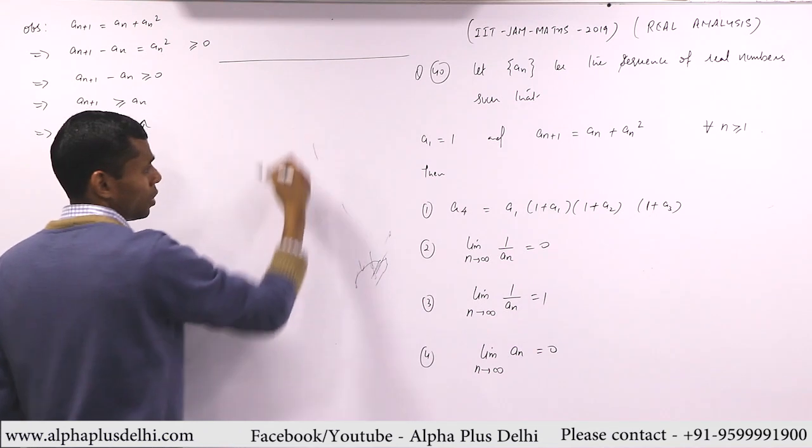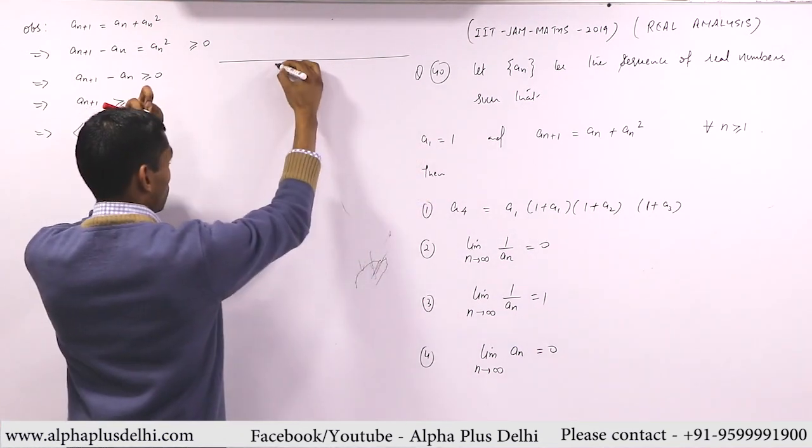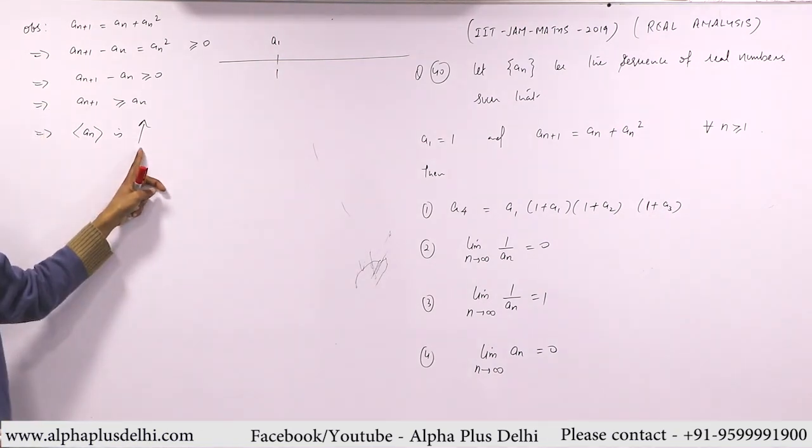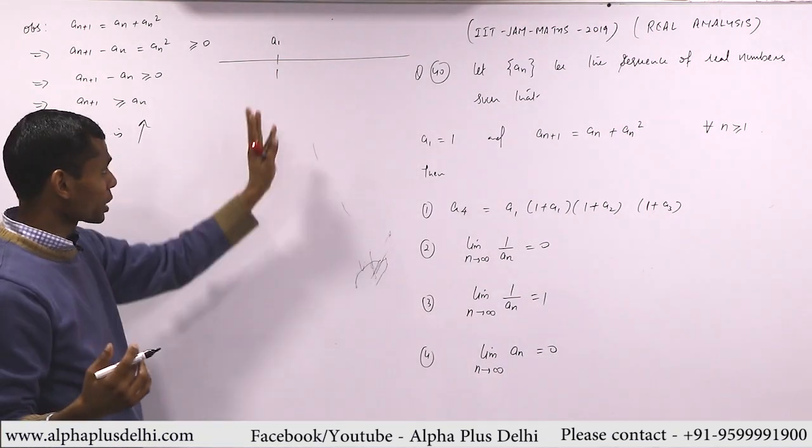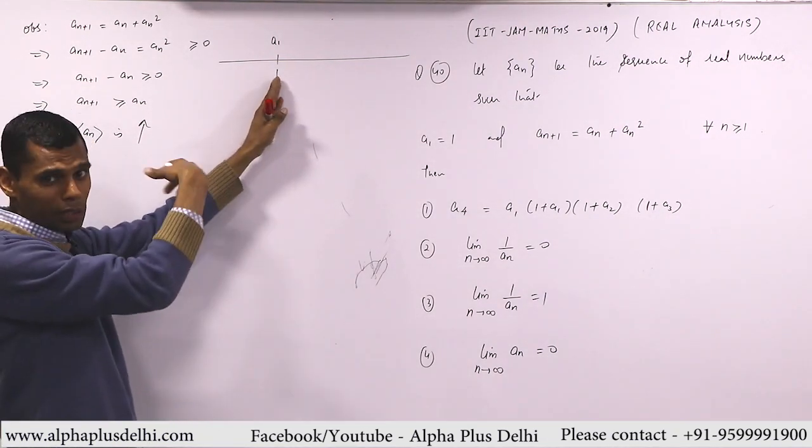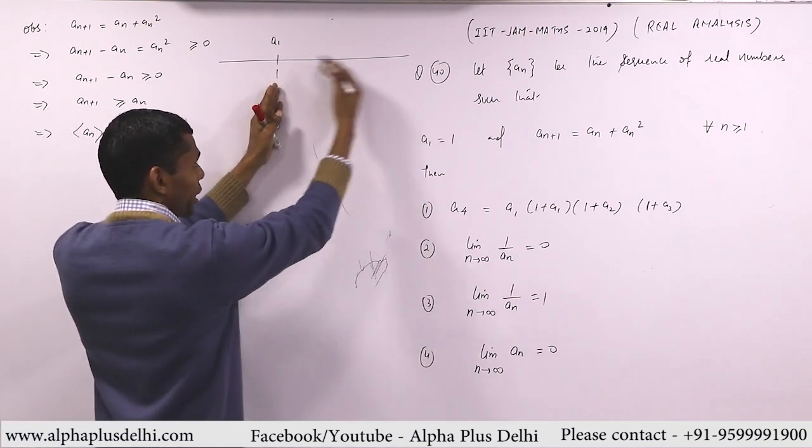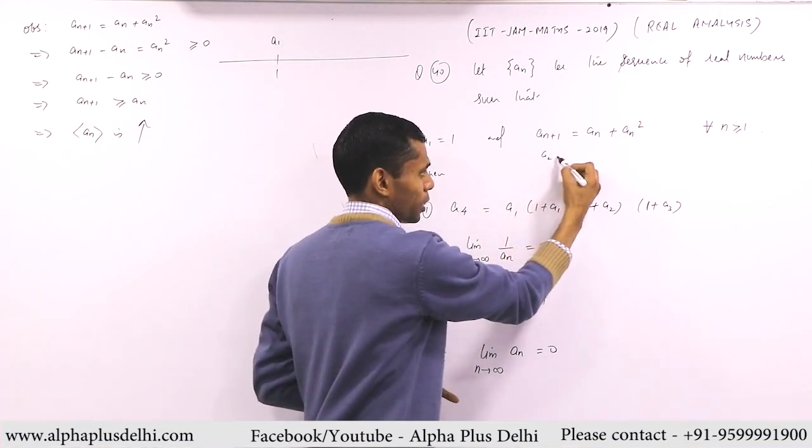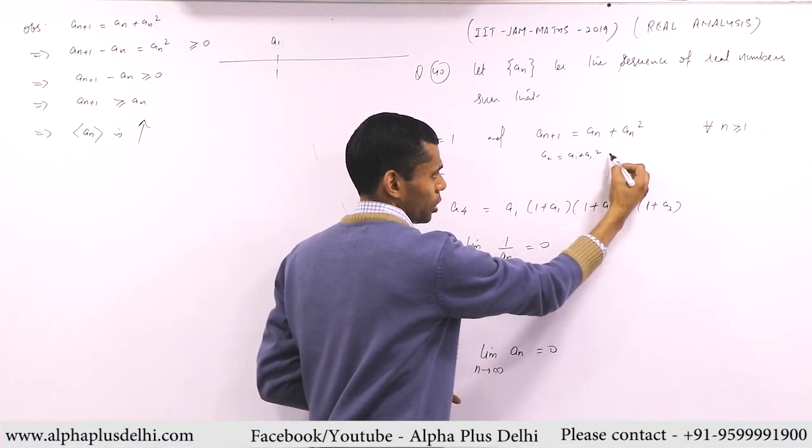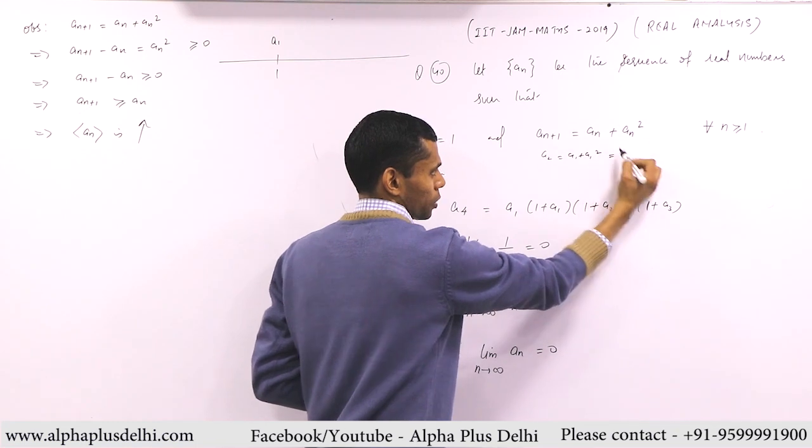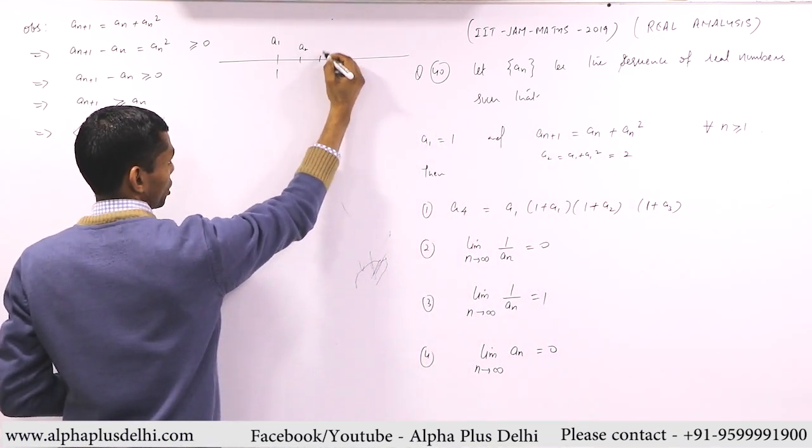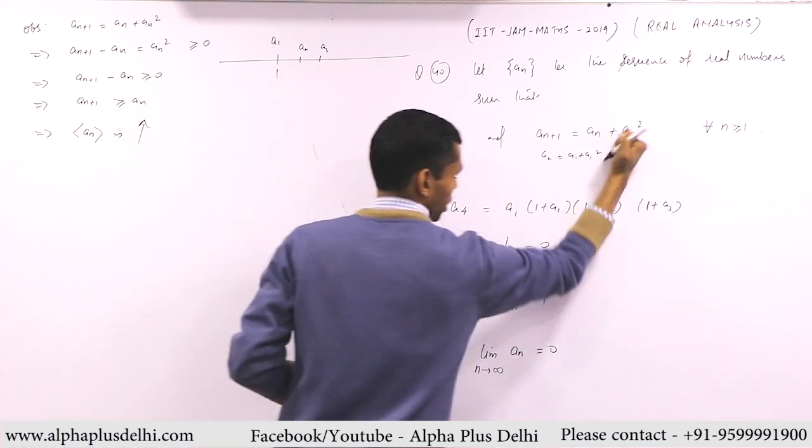Look at the picture. The first term a_1 is 1. This is your one, this is your a_1. And the sequence a_n is increasing. So a_2, a_3, a_4 cannot be to the left of one, they will be to the right of one. Either equal to one or to the right. From here you can also see what is a_2. a_2 will be a_1 + a_1^2. So that means this is 1 + 1, so this is 2. So this is a_1, this is a_2, this is a_3, and so on.